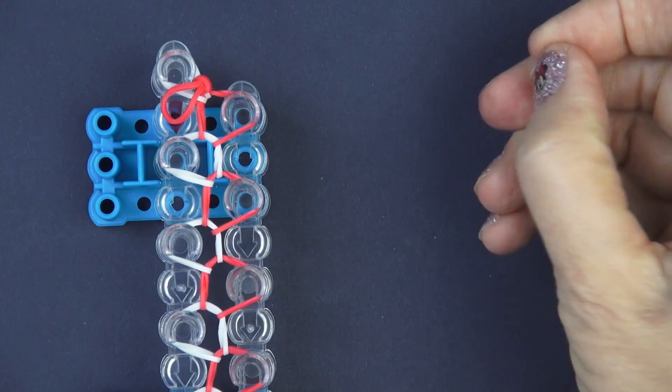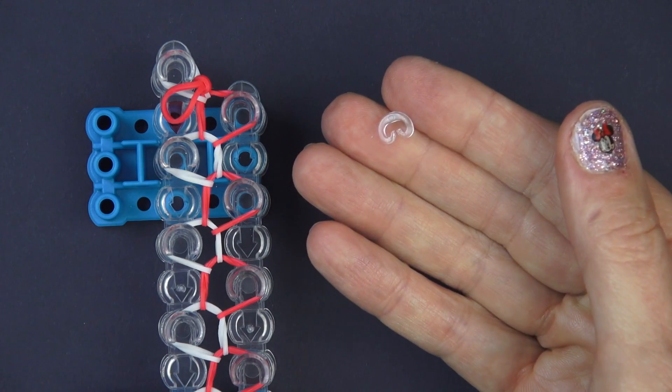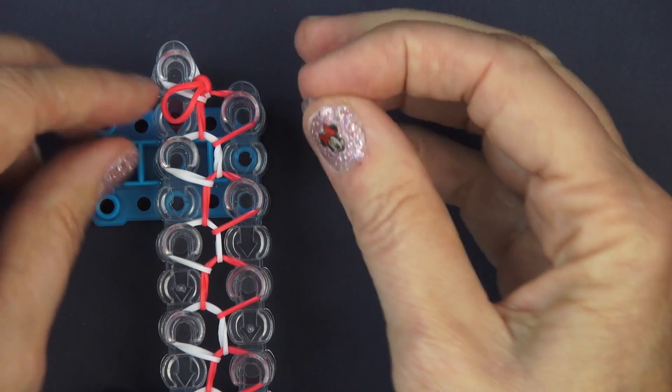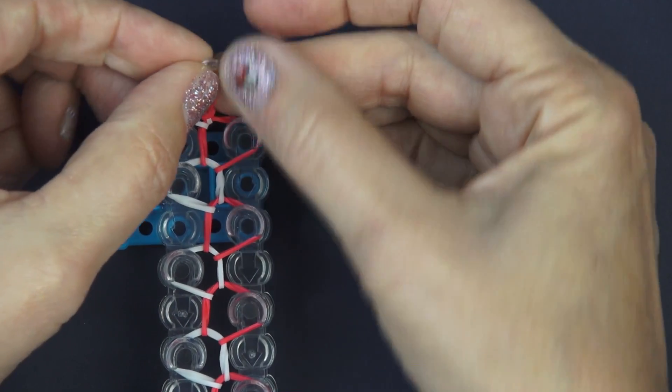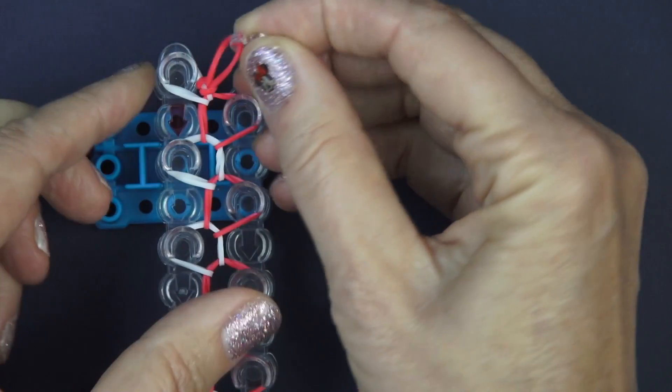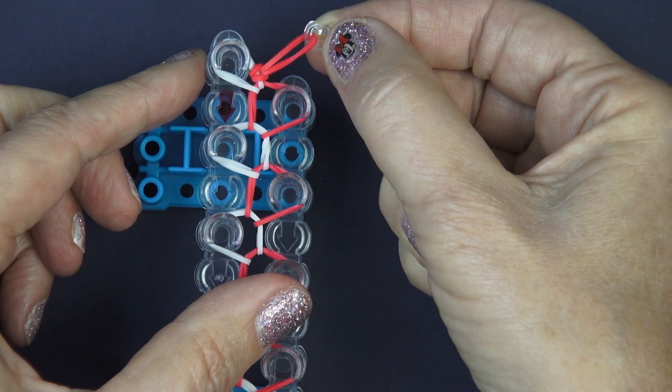Now you're ready for the clip. This is called a c-clip. Gee it looks just like a C doesn't it? And that you put on like that and put your rubber band through it. Now we're going to be ready to pull your bracelet off the loom.